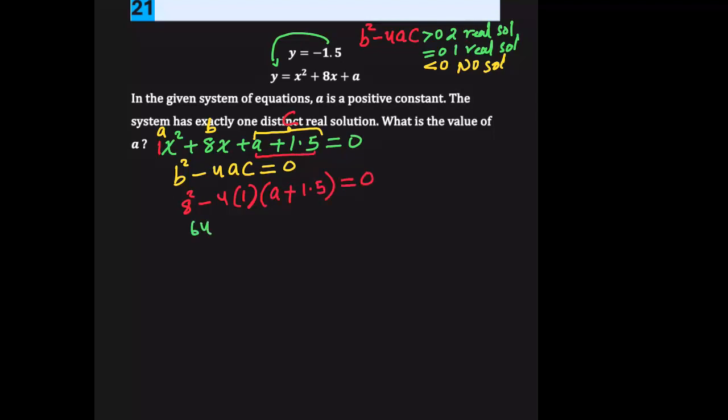8 squared is 64, minus 4a. When you distribute that to both terms, you get minus 6, equals 0. We're going to add these terms, and we have 58 minus 4a equals 0.